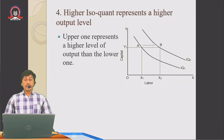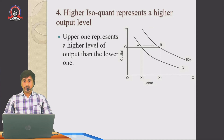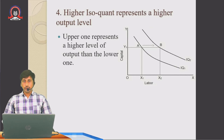Isoquants represent higher output levels. A higher isoquant indicates a higher output level. The further the isoquant is from the point of origin, the higher the output level it represents. As seen in the diagram, IQ2 is farther from the origin than IQ1, indicating a higher amount of production.